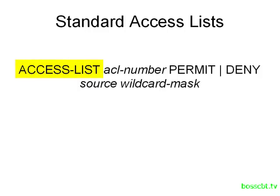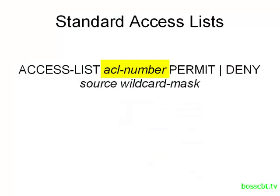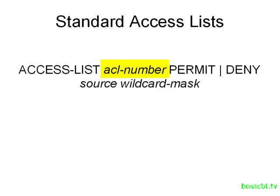It all begins with the access-list command, and the very first parameter is the access list number. This number has to fall between 1 and 99 or 1300 and 1999, so we have two ranges to choose from. The router will look at the number we configure, and if it falls within these two ranges, the router immediately knows this is a standard access list. The number also uniquely identifies this access list on the router, so each access list has its own number.